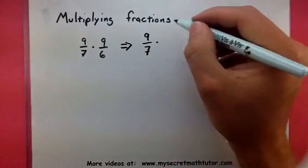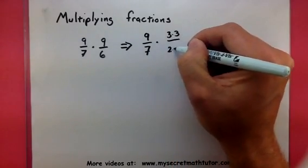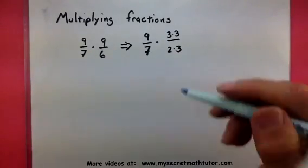We can see this if we look at the factors. The top is 3 times 3, and the bottom is 2 times 3. As you can see, there's a 3 in common that cancels out.